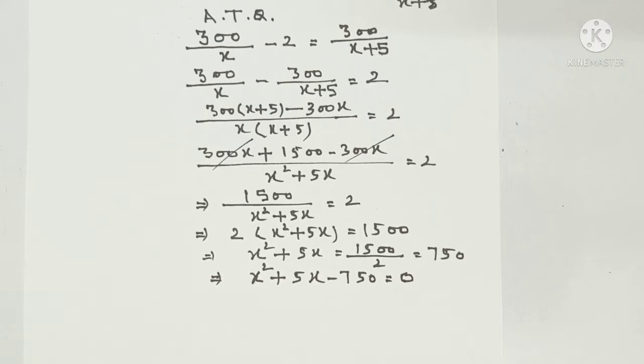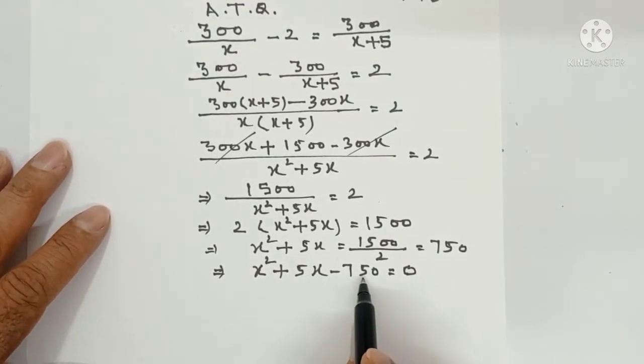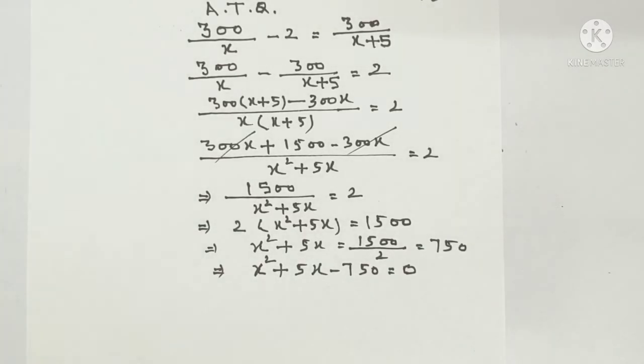Now you can solve it either by using the formula of discriminant or directly. Here coefficient of x square is 1. Constant term is 750. 1 into 750 gives 750. Now you have two factors.